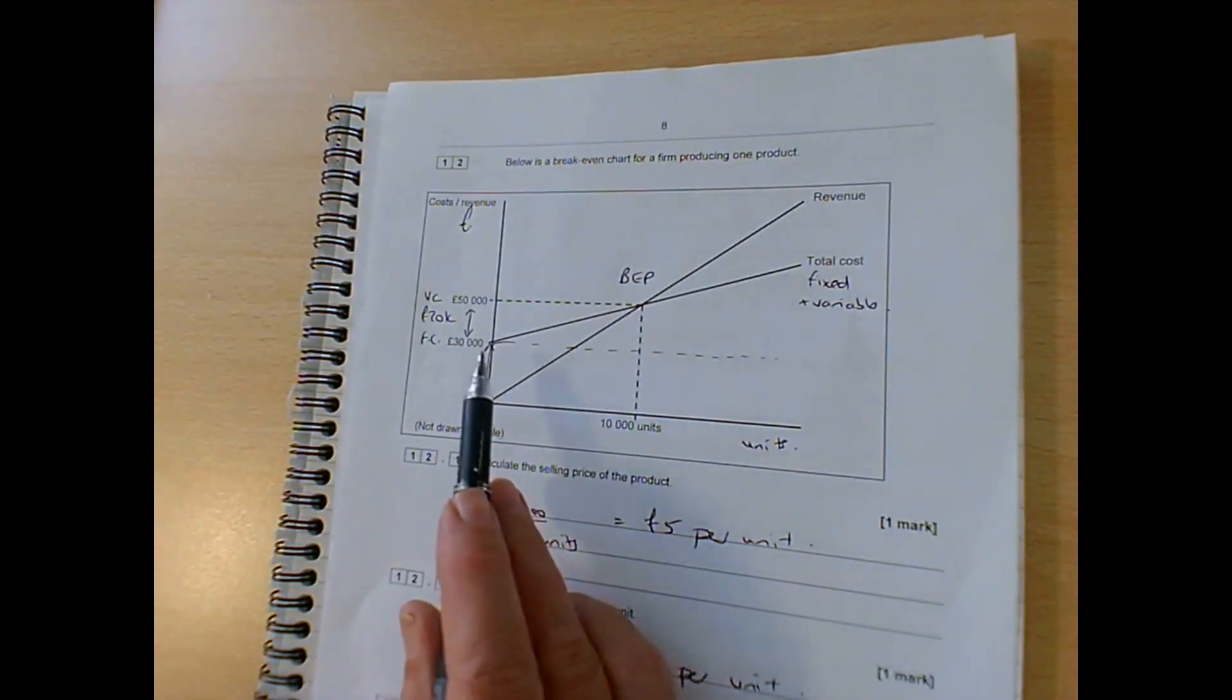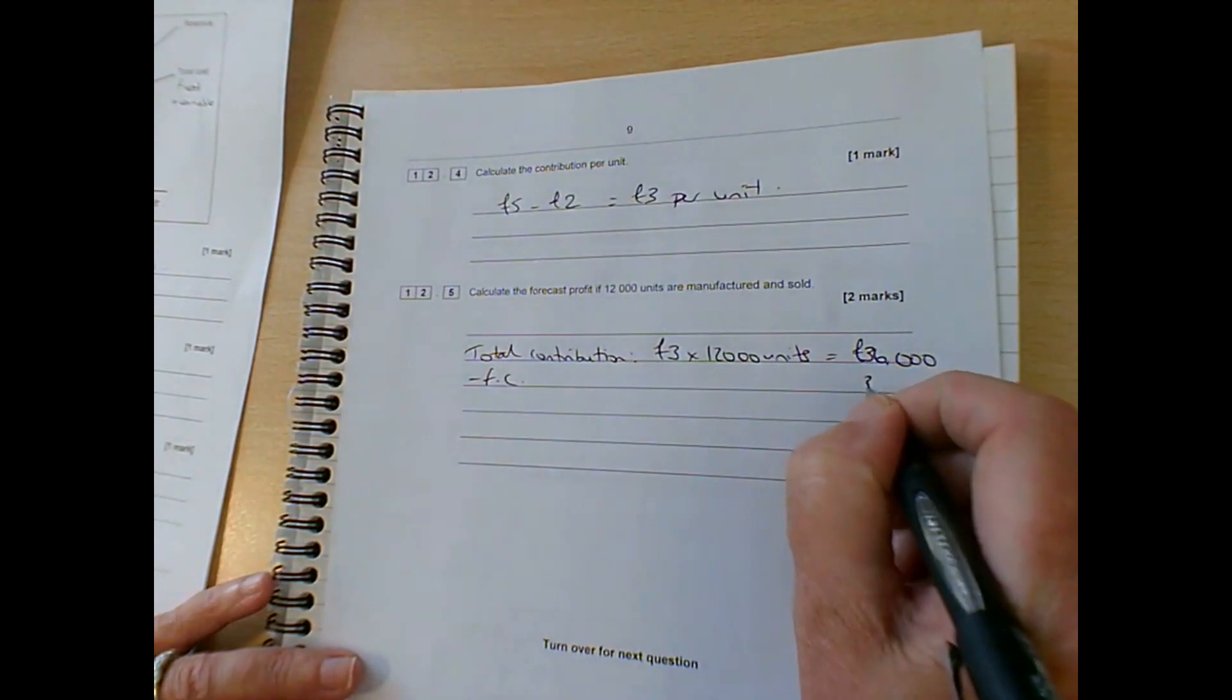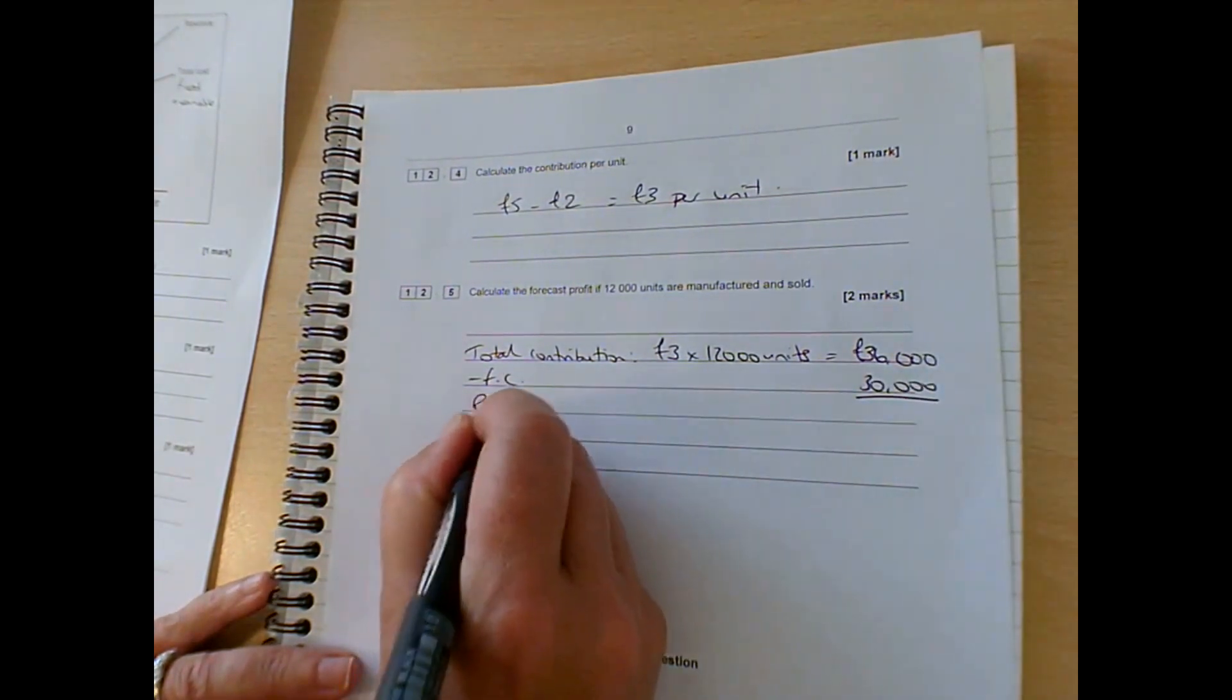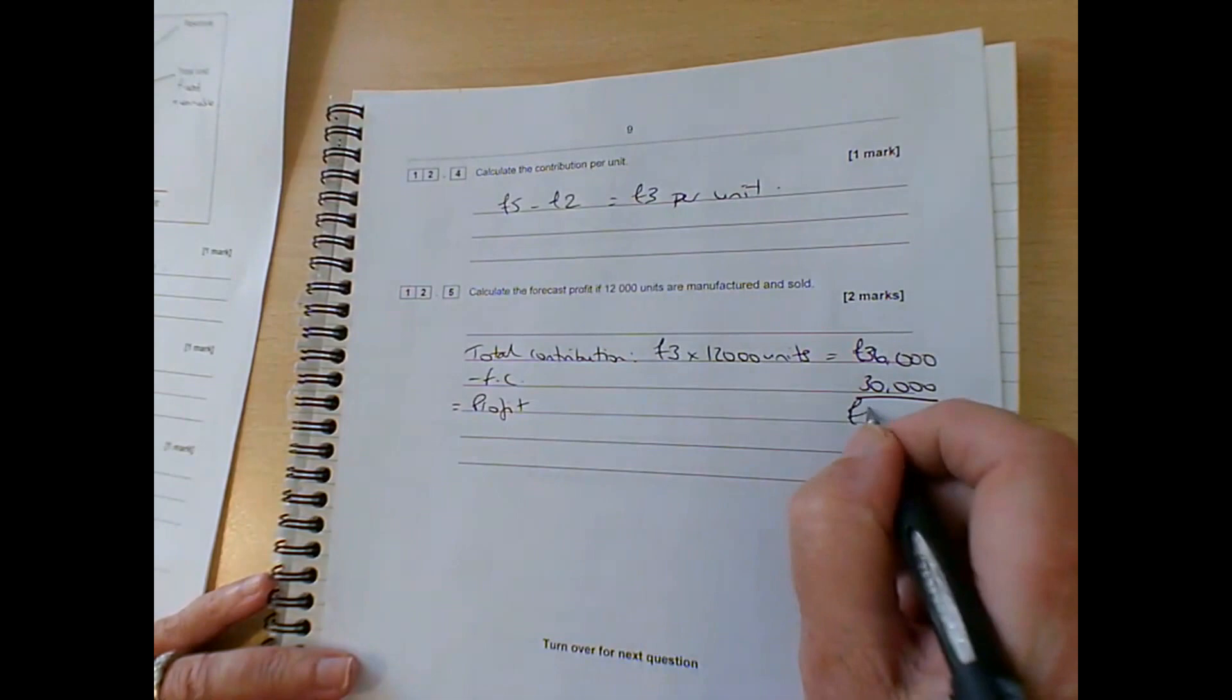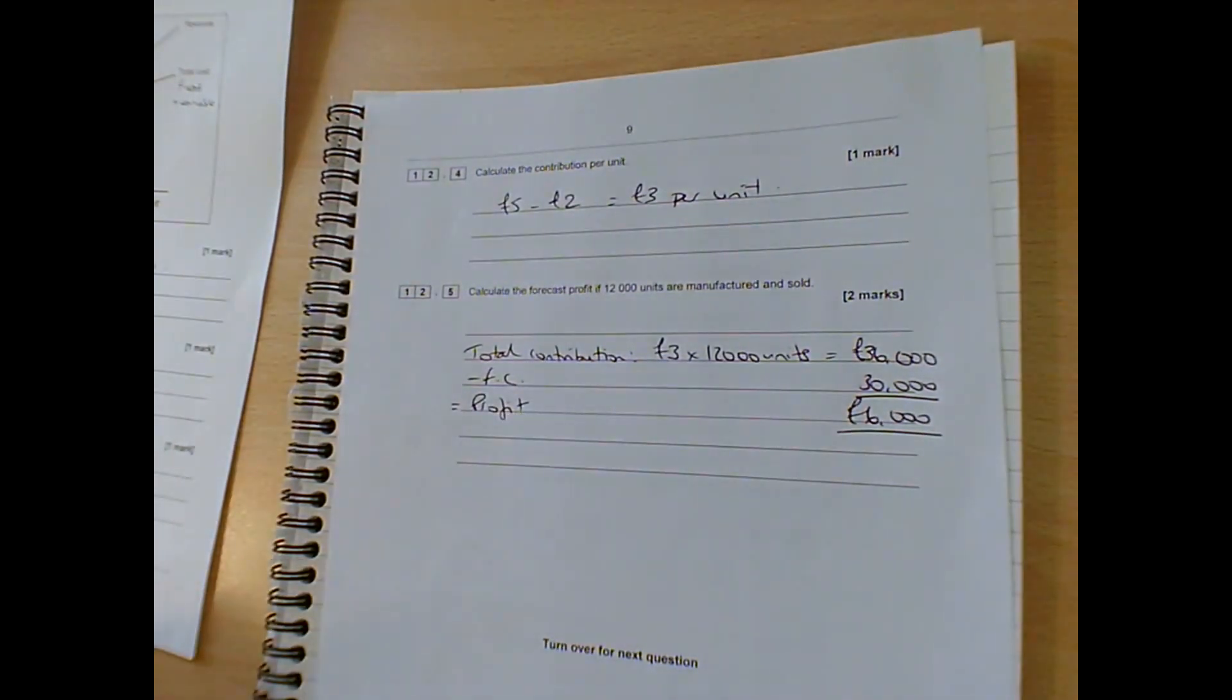If we take off the fixed costs, which were £30,000, that is going to give us a profit of £6,000. And then we get six marks, job done.